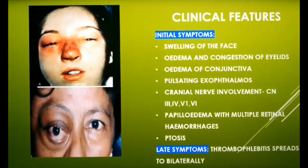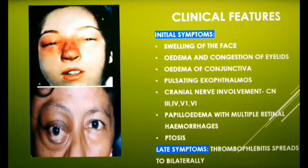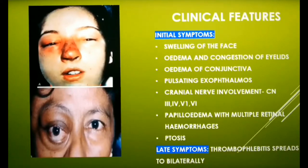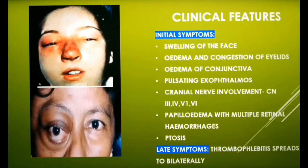The initial symptoms present with swelling of the face and edematous involvement of the eyelids. There is pain in the eye and it is tender to pressure. There is venous obstruction leading to marked edema and congestion of the eyelids. Edema of conjunctiva due to impaired venous return is also observed. There is pulsating exophthalmos and involvement of the third, fourth, fifth, and sixth cranial nerves, resulting in ophthalmoplegia and paresis or paralysis of the lateral rectus muscle. There is also papilledema with multiple retinal hemorrhages, and epistaxis due to increased intracranial pressure.